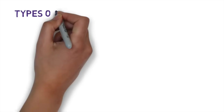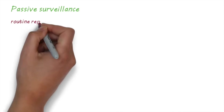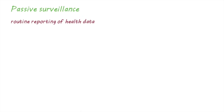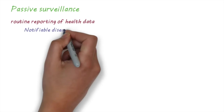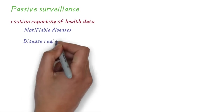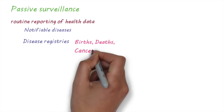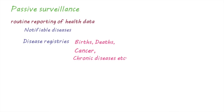Let's have a look at a few different types of surveillance. Passive surveillance describes the routine reporting of health data. In most countries, there are a number of diseases or conditions that are required to be notified by law, and surveillance of these notifiable diseases relies mostly on a passive system. Another example is a registry, which is a collection of health data on births, deaths, cancer, chronic diseases, and a variety of other conditions. Healthcare providers like hospitals also routinely collect data on the number and type of patients that seek treatment — this is another example of passive surveillance.